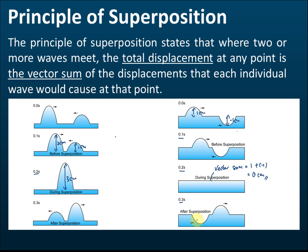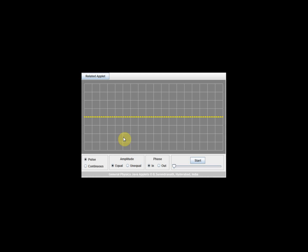The amplitude equals zero during superposition. At 0.3 seconds the two waves separate — the trough moves to the left and the crest moves to the right. These two examples show what happens when two waves meet, and according to the principle of superposition, the amplitude of the resultant wave is equal to the vector sum of the displacements of the two individual waves.